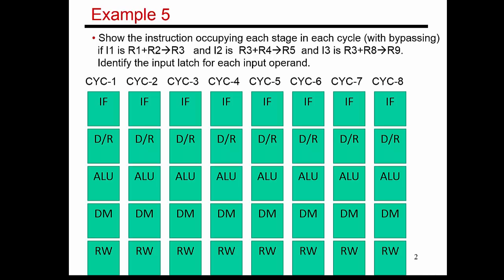Let me start by reminding you of what we had seen last time. If you look at this example where instruction 1 is producing a result in R3 and instruction 2 is reading the value of R3, let me show you how those instructions flow through the pipeline. Instruction 1 basically does instruction fetch, decode, and register read, followed by the ALU computation, going through data memory.